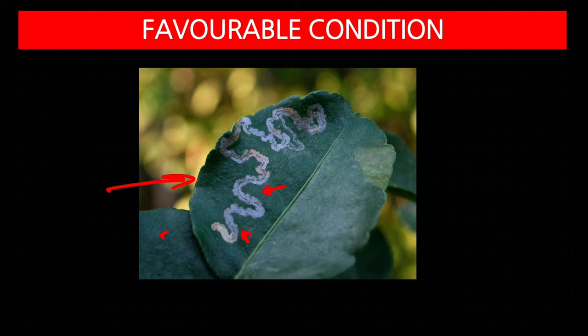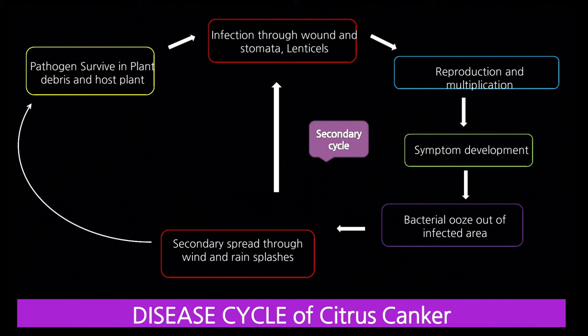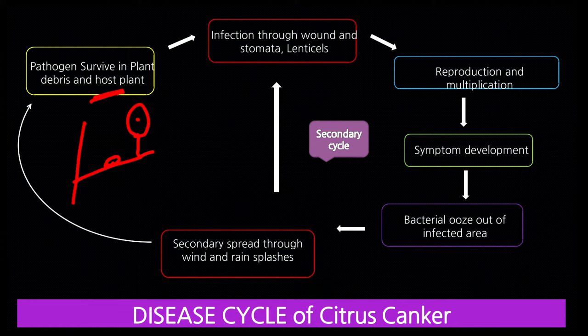Secondary spread occurs through wind, rain, and insects. The pathogen survives in plant debris and on the host plant, since citrus is a perennial plant. Bacteria survive in diseased plant leaves and stems. A farmer may take stem cuttings from an infected host and bring them to a new area for planting. There, the bacteria enter other leaves and plants through stomata, lenticel, or wounds, then reproduce and multiply. The bacteria multiply in the intercellular space or periplasmic space between cells.